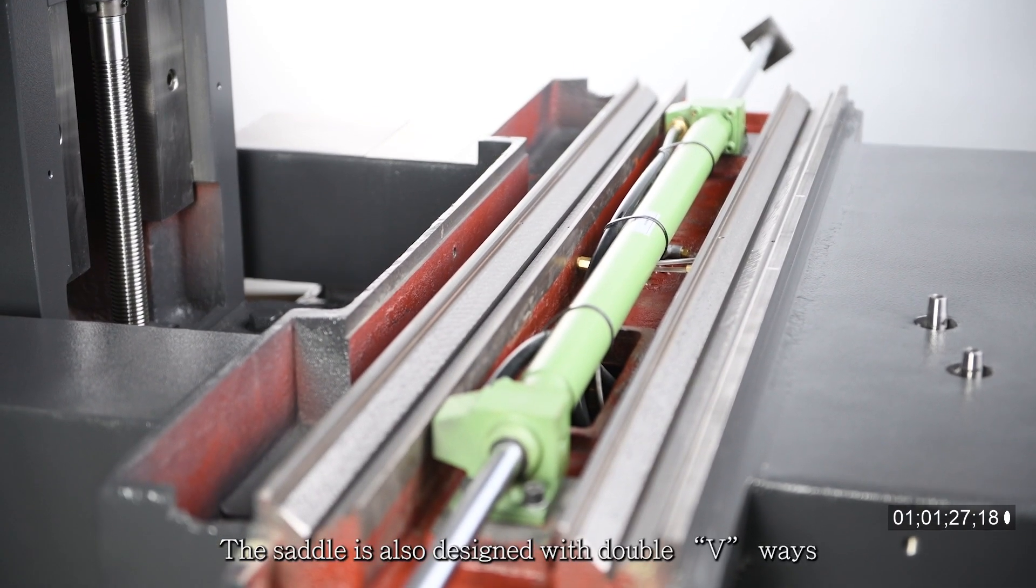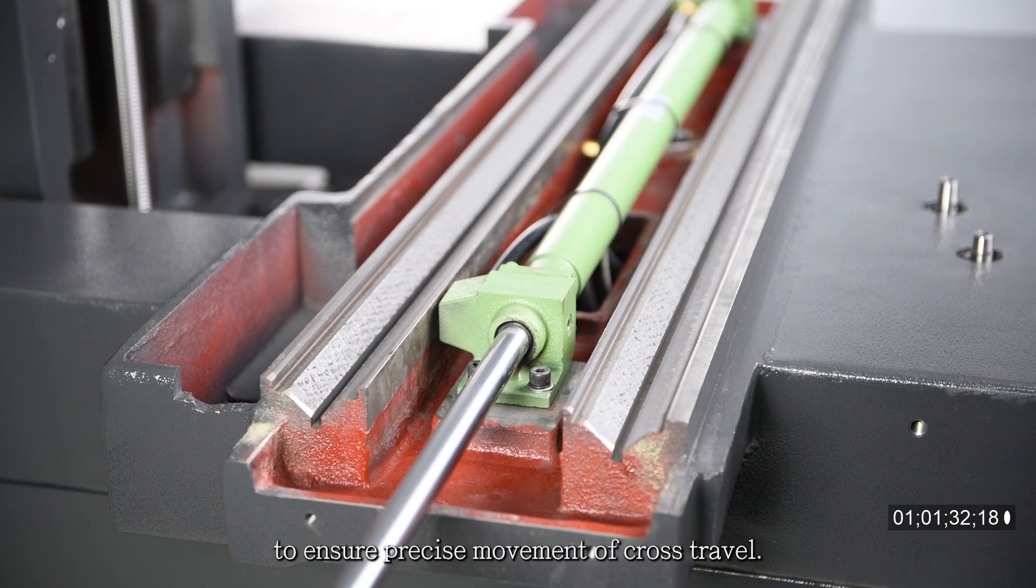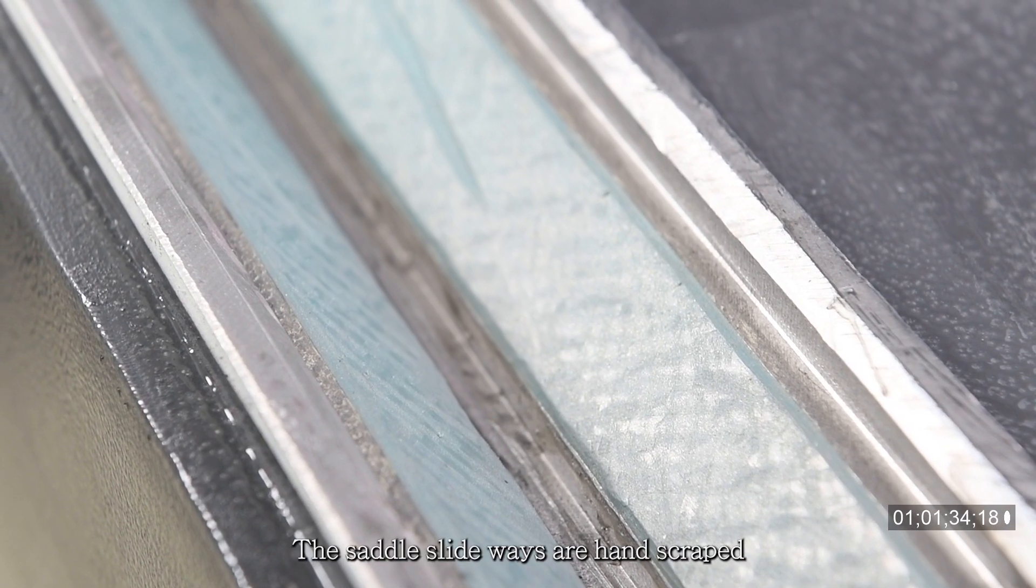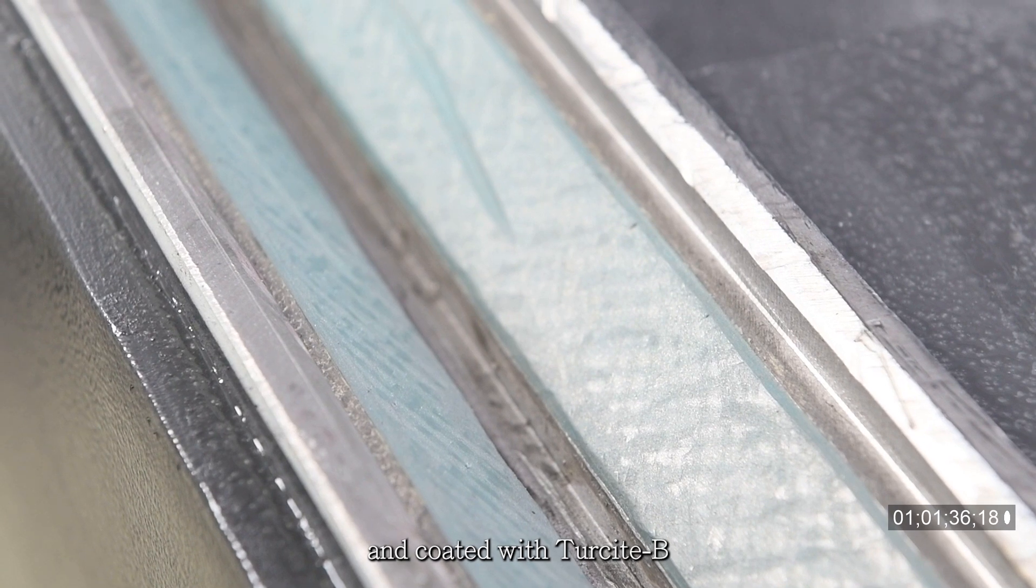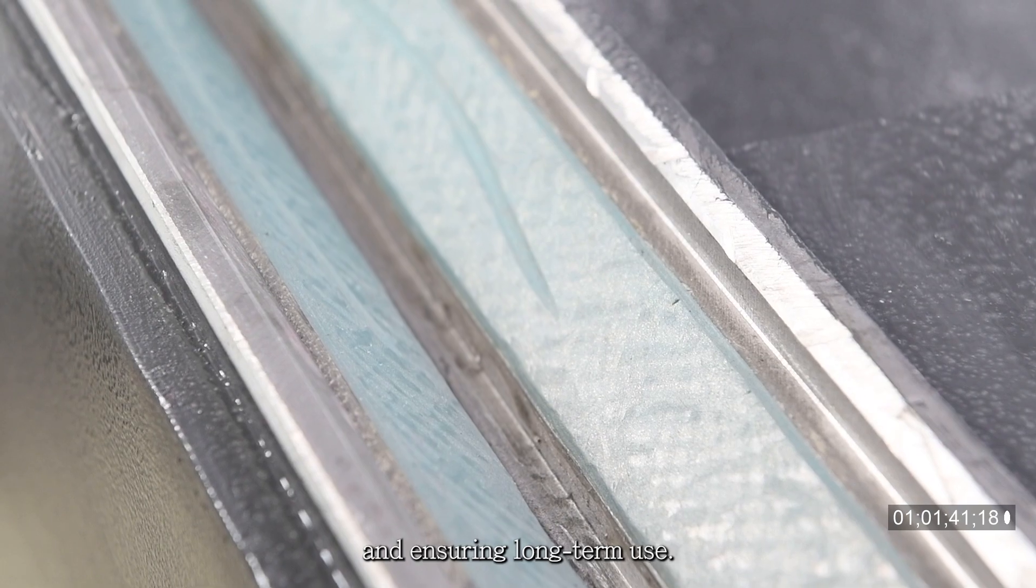The saddle is also designed with double V-ways to ensure precise movement of cross travel. The saddle slideways are hand scraped and coated with Turcite B for better retention of lubricating oil and ensuring long-term use.